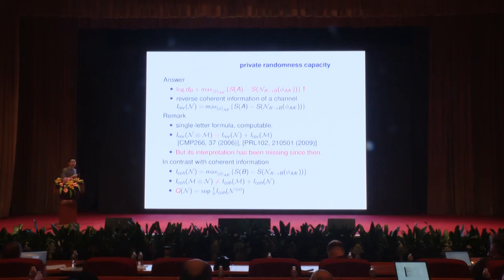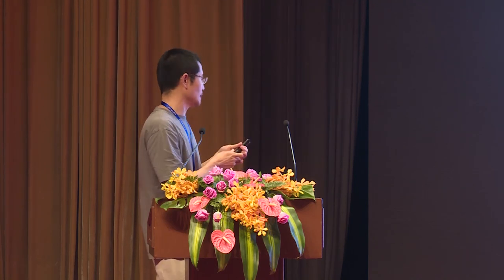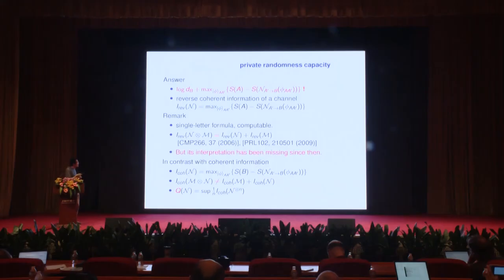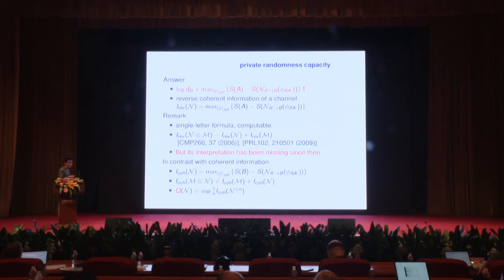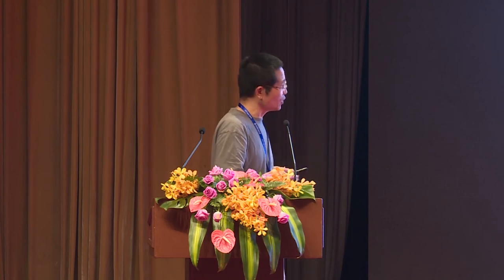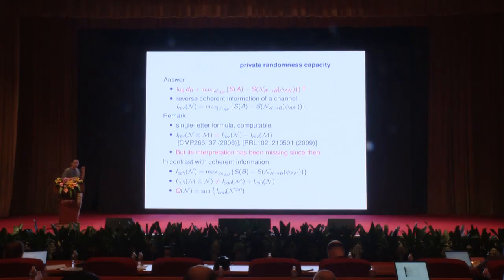Surprisingly, we can obtain the complete answer for the capacity problem. It is given by a single-letter formula, and interestingly the second term is just the reverse coherent information of a channel. This quantity was known more than ten years ago and is additive, but its operational interpretation had been missing since then. In our model, we provide an operational interpretation for this long-sought quantity.